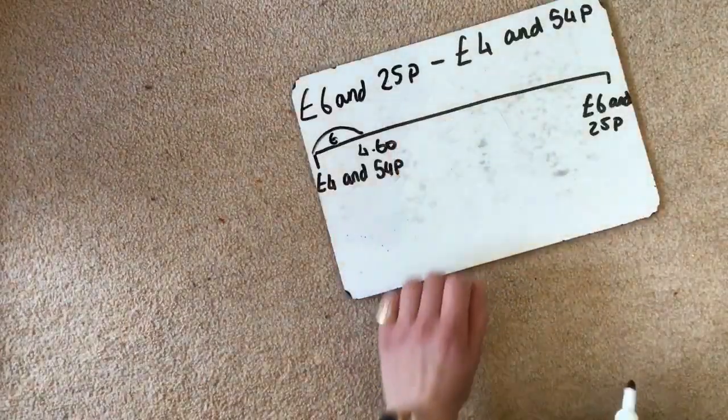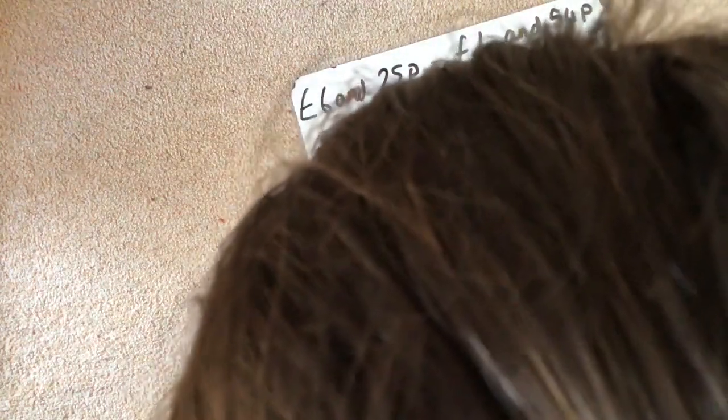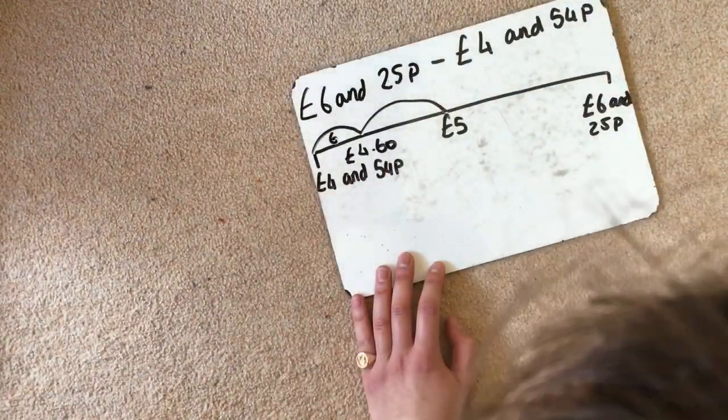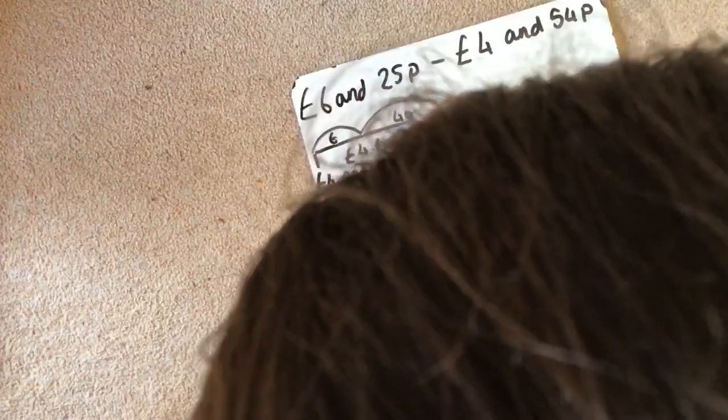Then I'm going to do another sensible jump up to £5. So that's a jump of 40p. That is a jump of 40p because 60p and 40p make 100p.